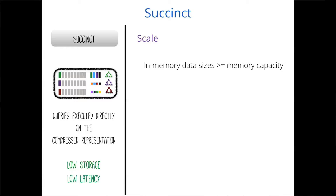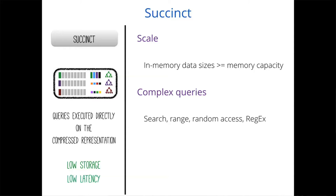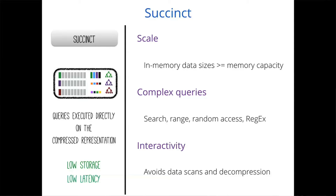Looking back at our initial goals, Succinct achieves scale by analyzing datasets much larger than available memory. It enables a large variety of complex operations — search, range queries, random accesses, regular expressions — directly on the compressed representation. And it provides these properties without giving up interactivity, executing operations at very low latencies by avoiding data scans and decompression for almost all queries.